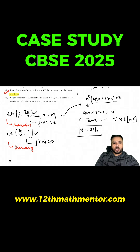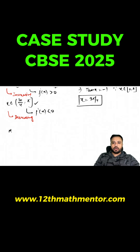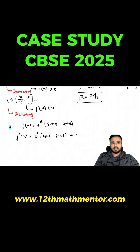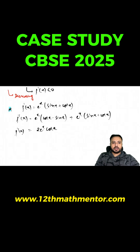For Question 2, we need to determine whether the critical point x = 3π/4 in [0, π] is a local maximum, local minimum, or point of inflection. We differentiate f'(x) = eˣ(sin x + cos x) again. The second derivative is f''(x) = eˣ(cos x − sin x) + eˣ(sin x + cos x), which simplifies to f''(x) = 2eˣ cos x.